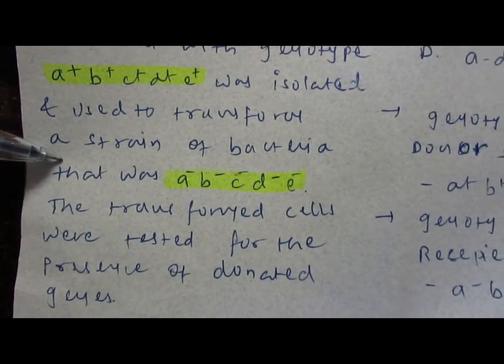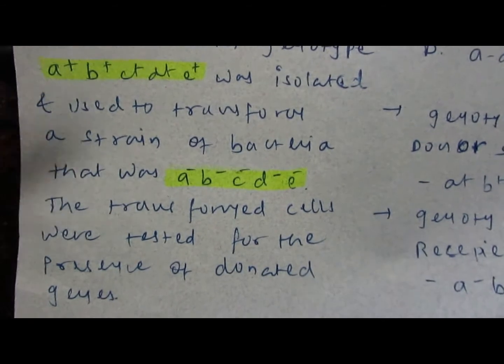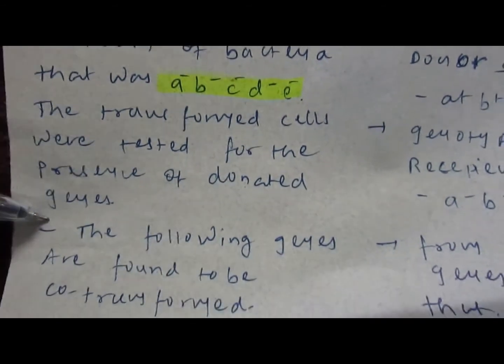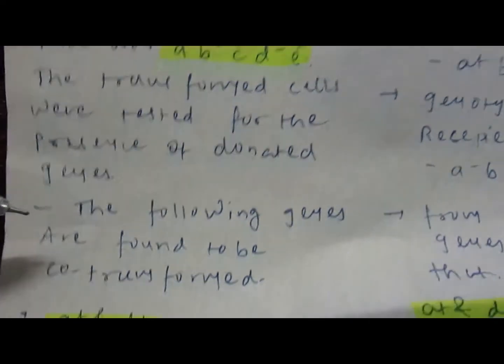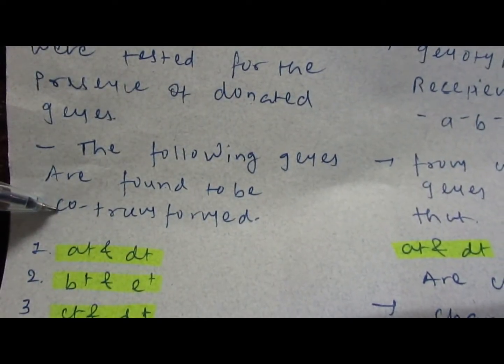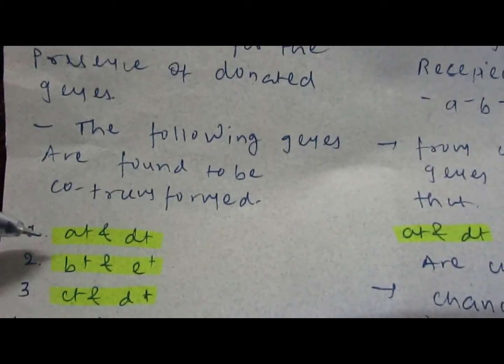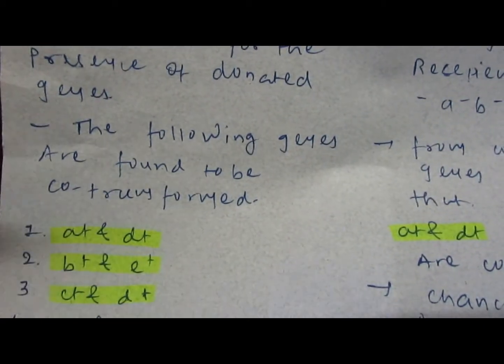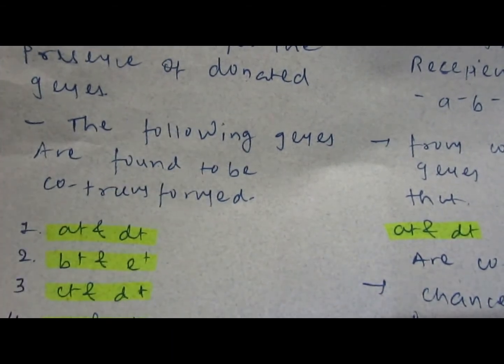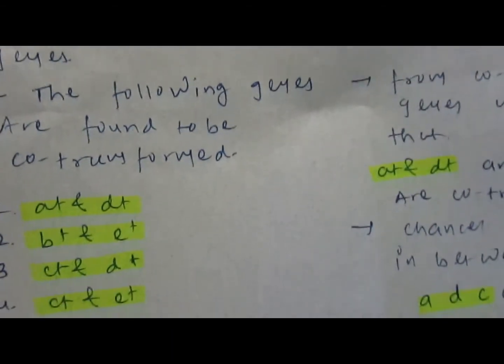The transformed cells were tested for the presence of donated genes. The following genes are found to be co-transformed: the first one is a+ and d+ transformed together, second one is b+ and e+ transformed together.